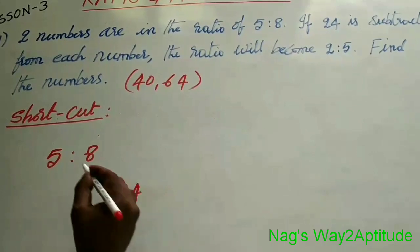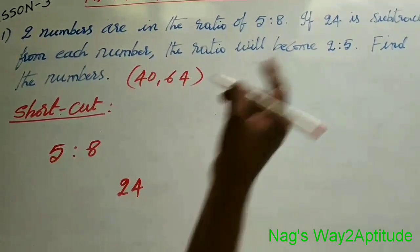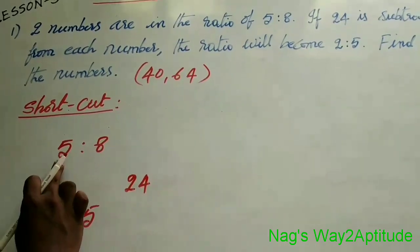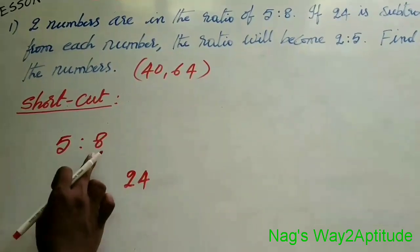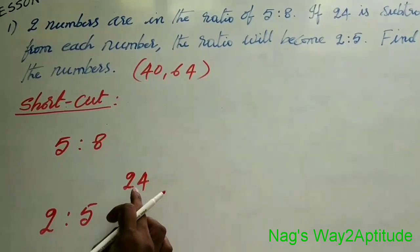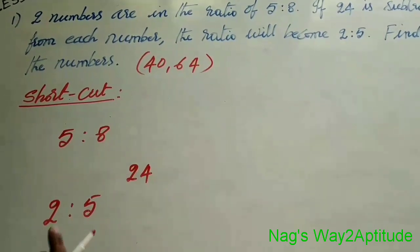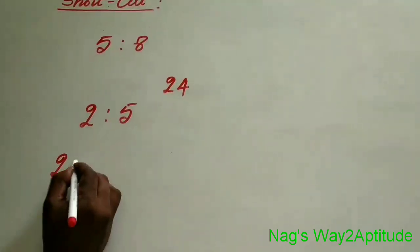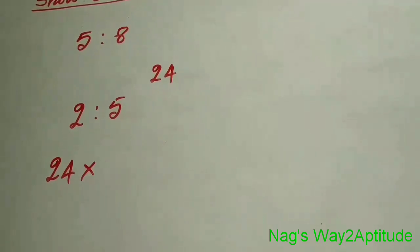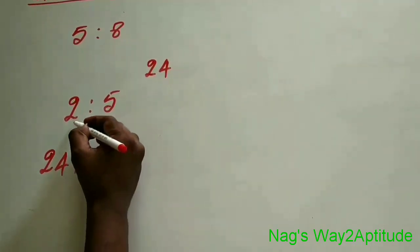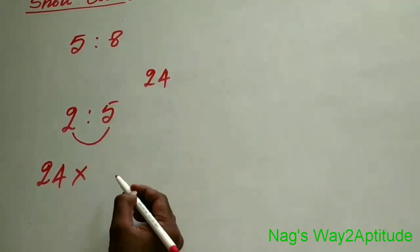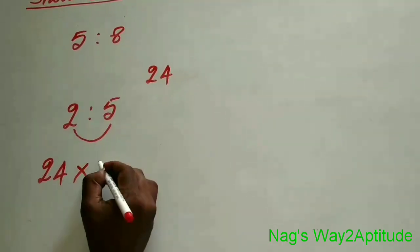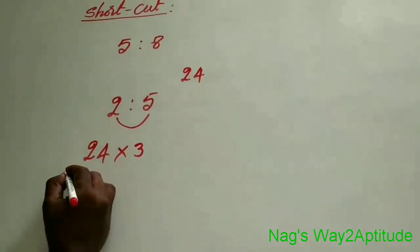After subtraction of 24 from the original numbers, the ratio is 2 is to 5. So you write 2 is to 5 here. From these two original numbers, you subtract 24, and after subtraction the ratio is 2 is to 5. After writing like this, you take 24 into the difference between the terms of this ratio. The difference between 2 and 5 is 3.